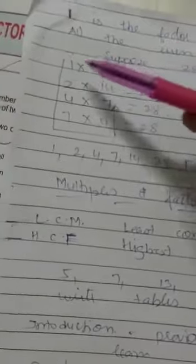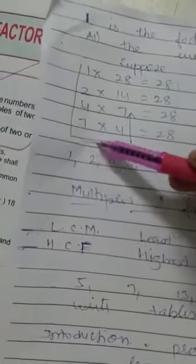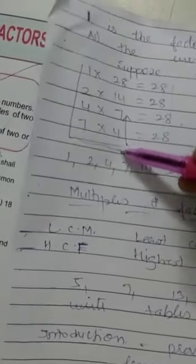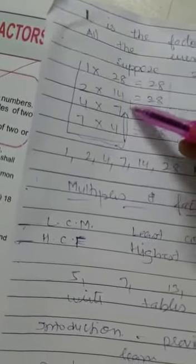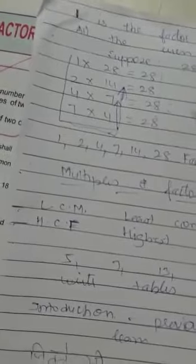Now how do we know what are its factors? From these: 1, 2, 4, 7, then we will take the reverse - 14 and 28. So how many factors does 28 have?